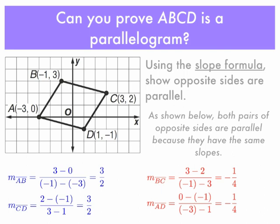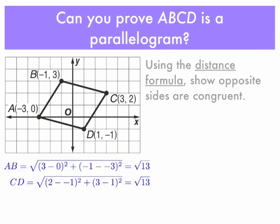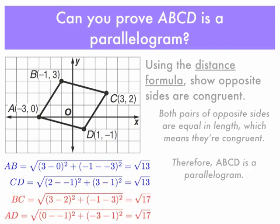The slope formula is one way to prove that a figure with coordinates is a parallelogram. You can also use the distance formula. With the distance formula, you want to show that opposite sides are congruent. For example, AB and CD are both equal to the square root of 13, and BC and AD are both equal to the square root of 17. Since both pairs of opposite sides are equal in length, they're congruent, and so ABCD is a parallelogram.